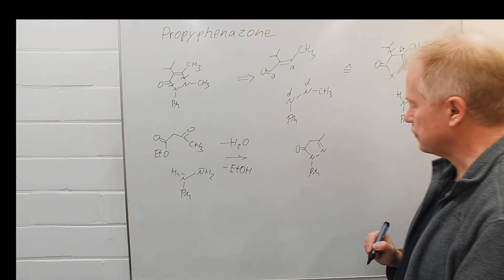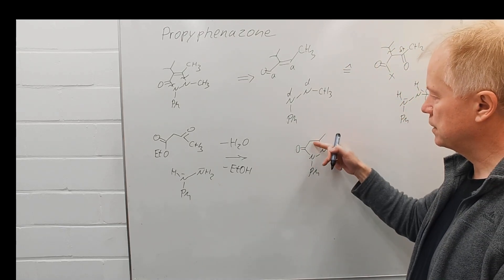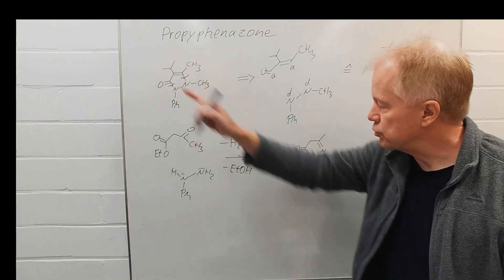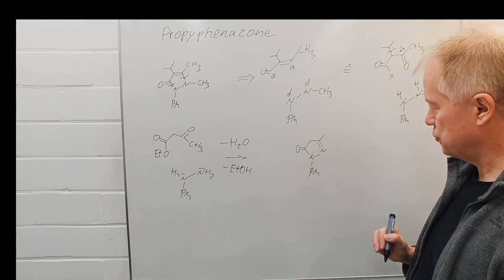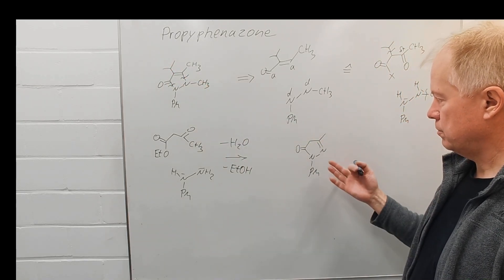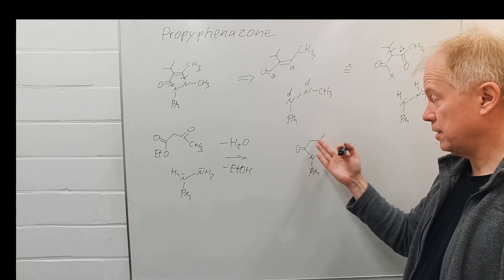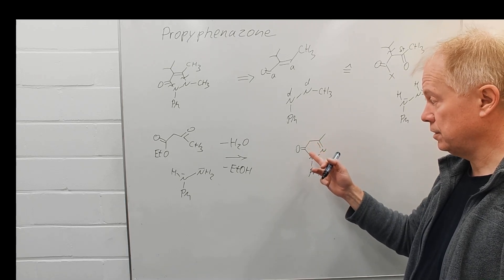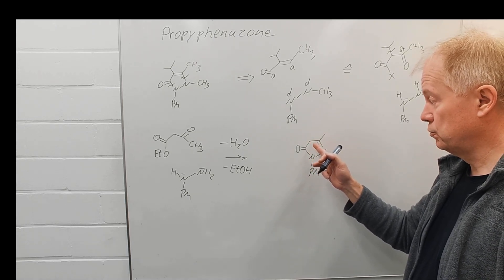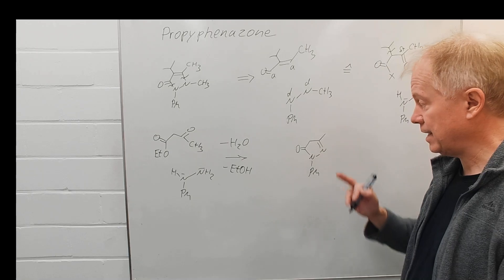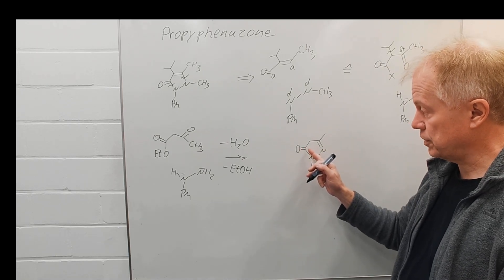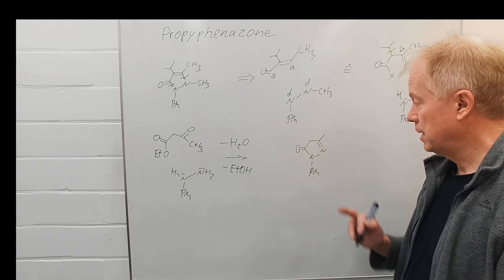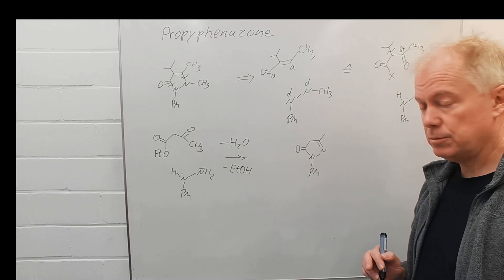How do we get the isopropyl group at this position? We could try a base to deprotonate here, since this methyl group is double activated by conjugation with the carbonyl group and the imine.